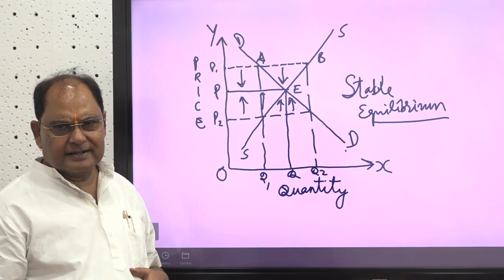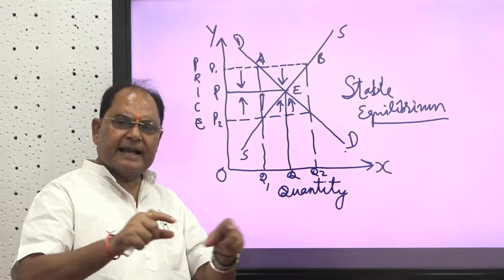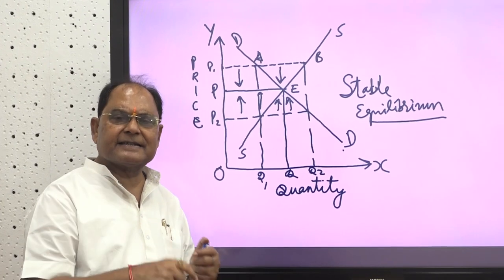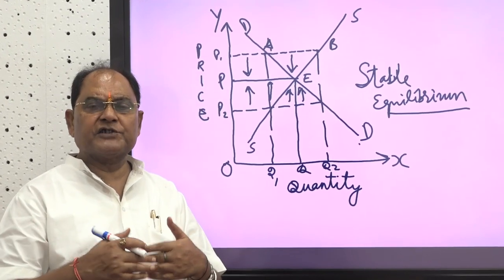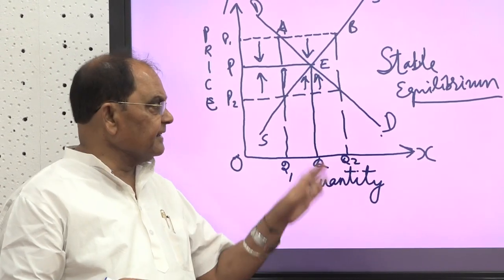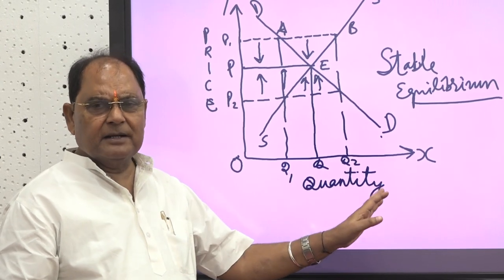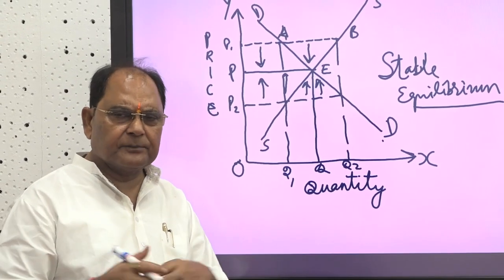Equilibrium tells us a direction — like on a carom board where pieces are placed at different positions, once a strike is taken a new equilibrium is created. These are the three functional types of equilibrium: stable, unstable, and neutral. There are other types of equilibrium as well.